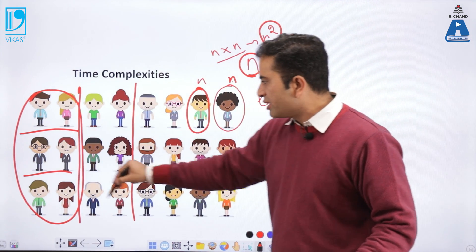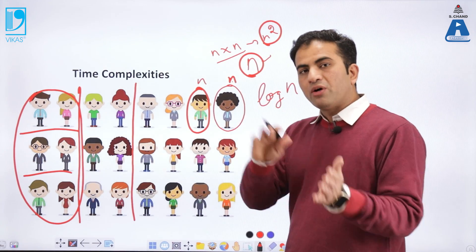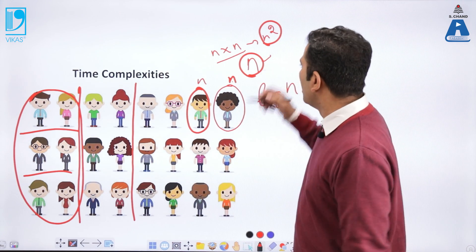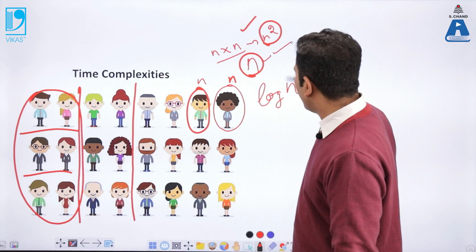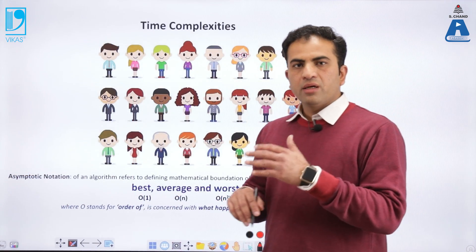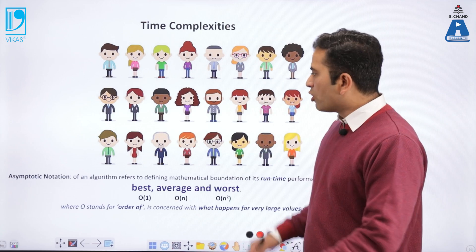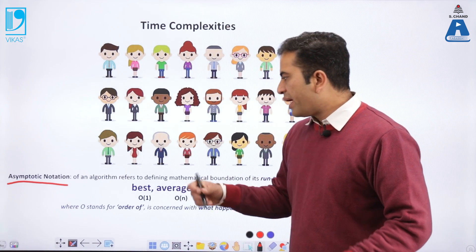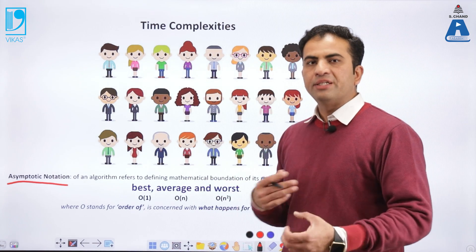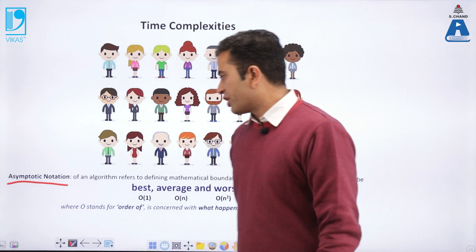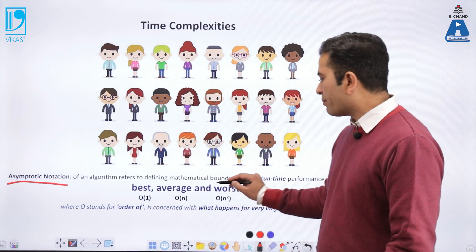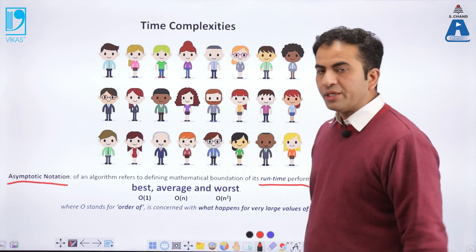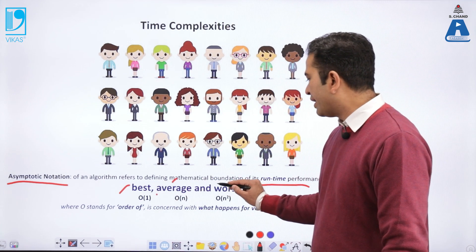Now arranging all these things in terms of computation in computer science: n square, n, and log n. In computation, there is a notation called asymptotic notation. If we want to know the complexities of an algorithm, we must know the asymptotic notation, which refers to defining the mathematical foundation of its runtime performance. There are three types of runtime performance: best, average, and worst.